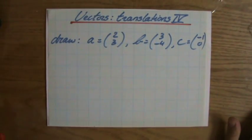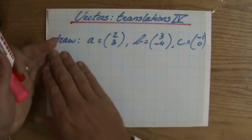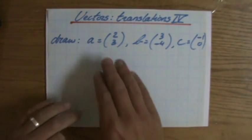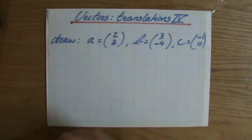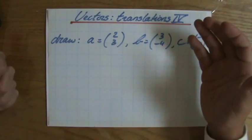This is the last video regarding vectors and translations. The question now is, draw these three vectors in single column notation and label them.